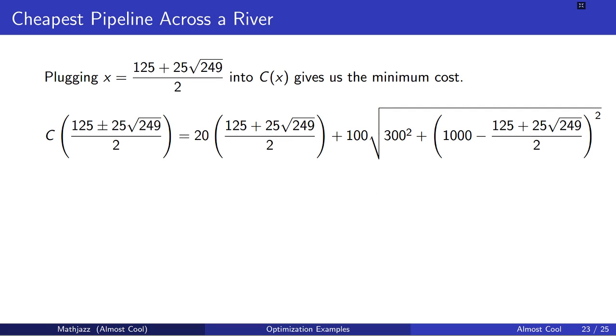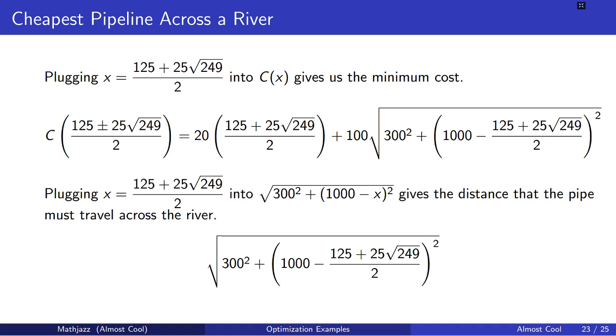If we plug this x into our cost equation, we will get the minimum cost. And if we plug this x into the Pythagorean theorem here, we will get the distance that the pipe has to travel across the river. Again, x is the distance along the bank of the river, so we don't need to do anything to get that length anymore. But now we know x is the length of the pipe along the side of the river.